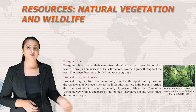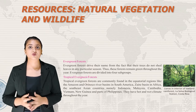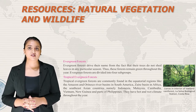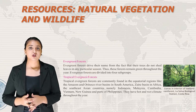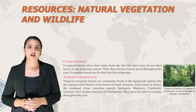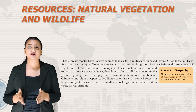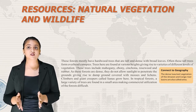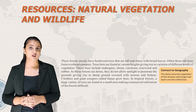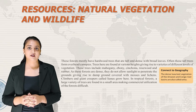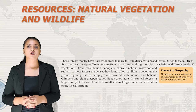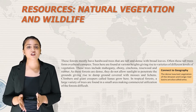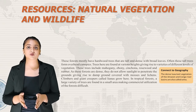Tropical evergreen forests are commonly found in the equatorial region, such as the Amazon and Orinoco river basins in South America, Zaire basin in Africa, and Southeast Asian countries like Indonesia, Malaysia, Cambodia, Vietnam, New Guinea and parts of the Philippines. They have a hot and wet climate throughout the year with tall, dense hardwood trees with broad leaves that often form overhead canopies. Trees are found at various heights, including Mahogany, Ebony, Cinchona, Rosewood and Rubber. Climbers and giant creepers called lianas grow here, and a large variety of trees in a small area makes commercial utilization difficult.